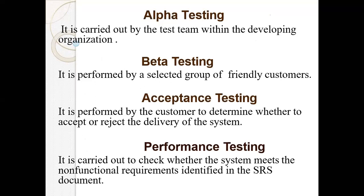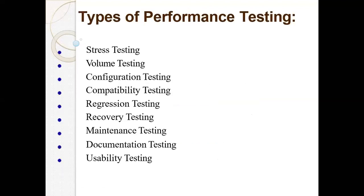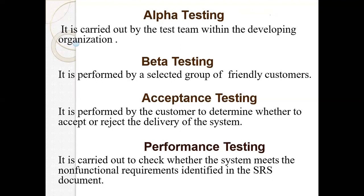Alpha testing is carried out by the test team within the developing organization. Beta testing is performed by a selected group of friendly customers in an initial release. Acceptance testing is performed by the customer to determine whether to accept or reject the delivery of the system. Performance testing is carried out to check whether the system meets the non-functional requirements identified in the SRS document — the Software Requirements Specification.